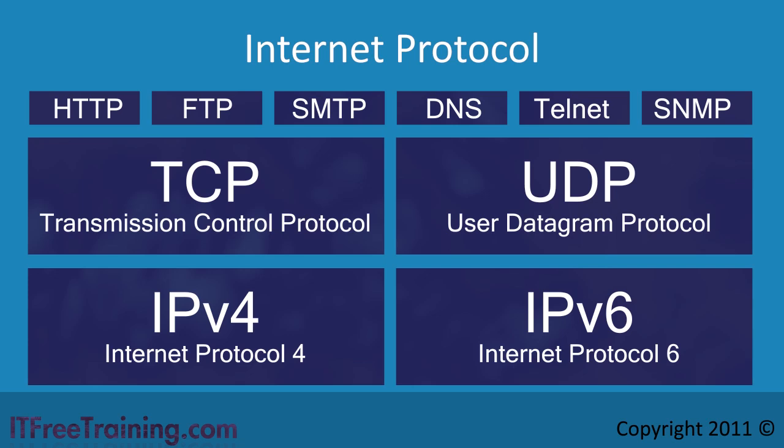This brings up the question: when an application on your computer communicates on the network, which protocol does it use? When you have a computer that has both IP version 4 and IP version 6 protocols enabled, Windows will automatically select which protocol to use. With Windows Vista and above, Microsoft prefers the IP version 6 protocol over IP version 4 when it is not clear which one to use.